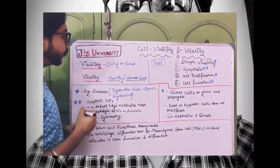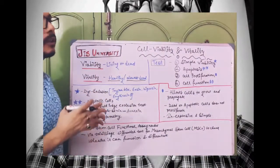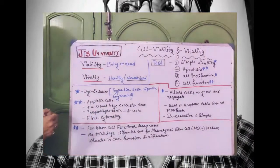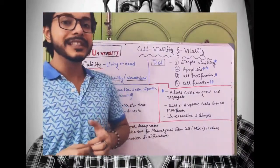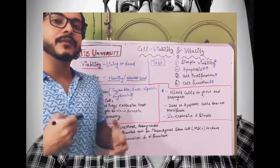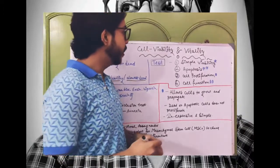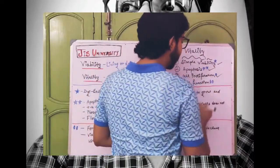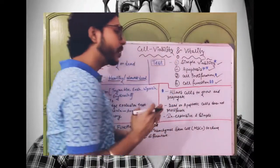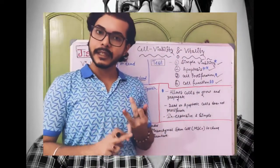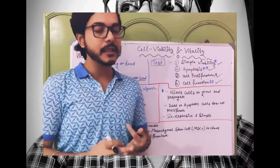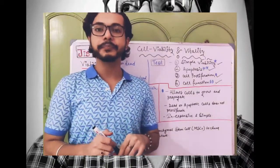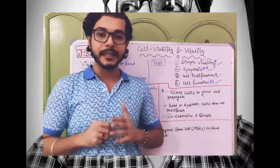What are the different types of tests that can be done to see the cell's viability or vitality? There are four categories: simple viability study, apoptosis test, cell proliferation test, and cell function test. These four categories of test can be done to see cell viability and vitality.